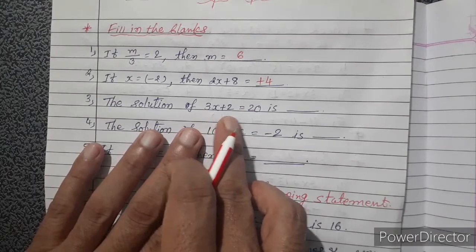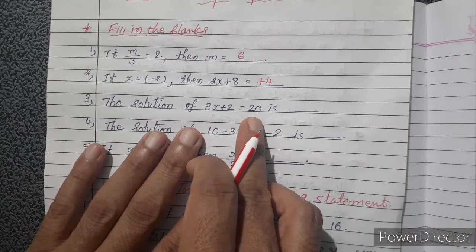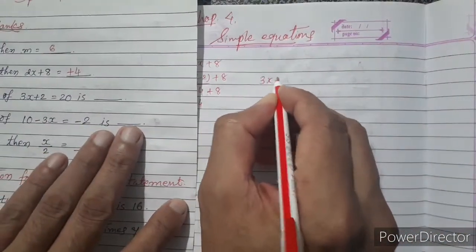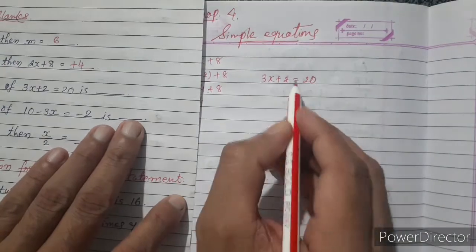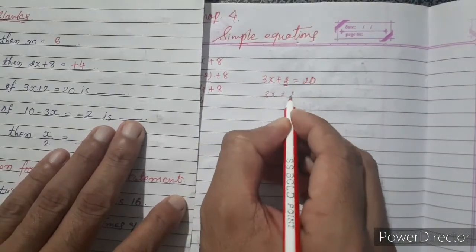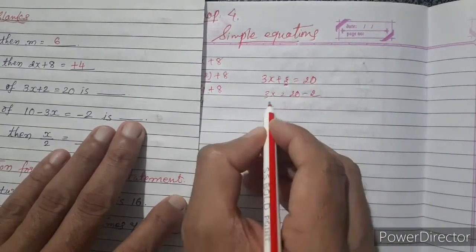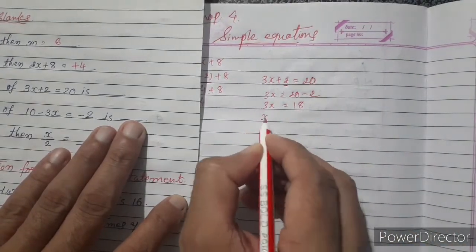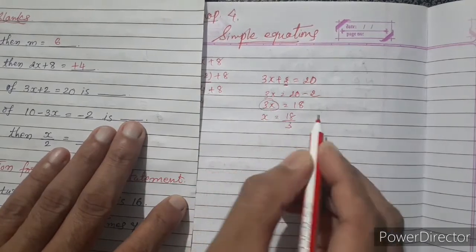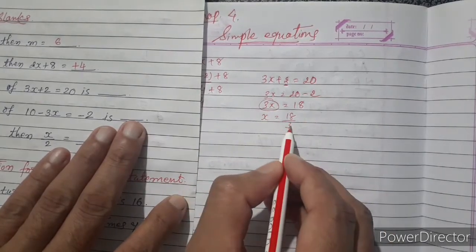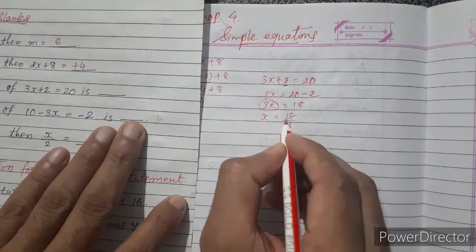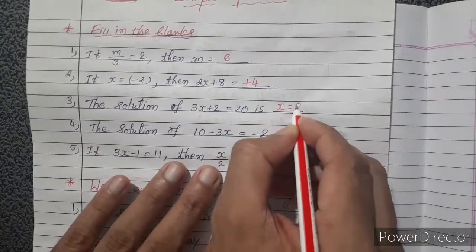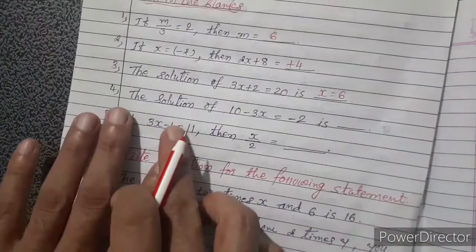The solution of 3x plus 2 equals 20. We change the side of 2: 3x equals 20 minus 2, that means 3x equals 18. Now x equals 18 divided by 3. The multiply form changes to division side, so x equals 6. Your answer is x equals 6.